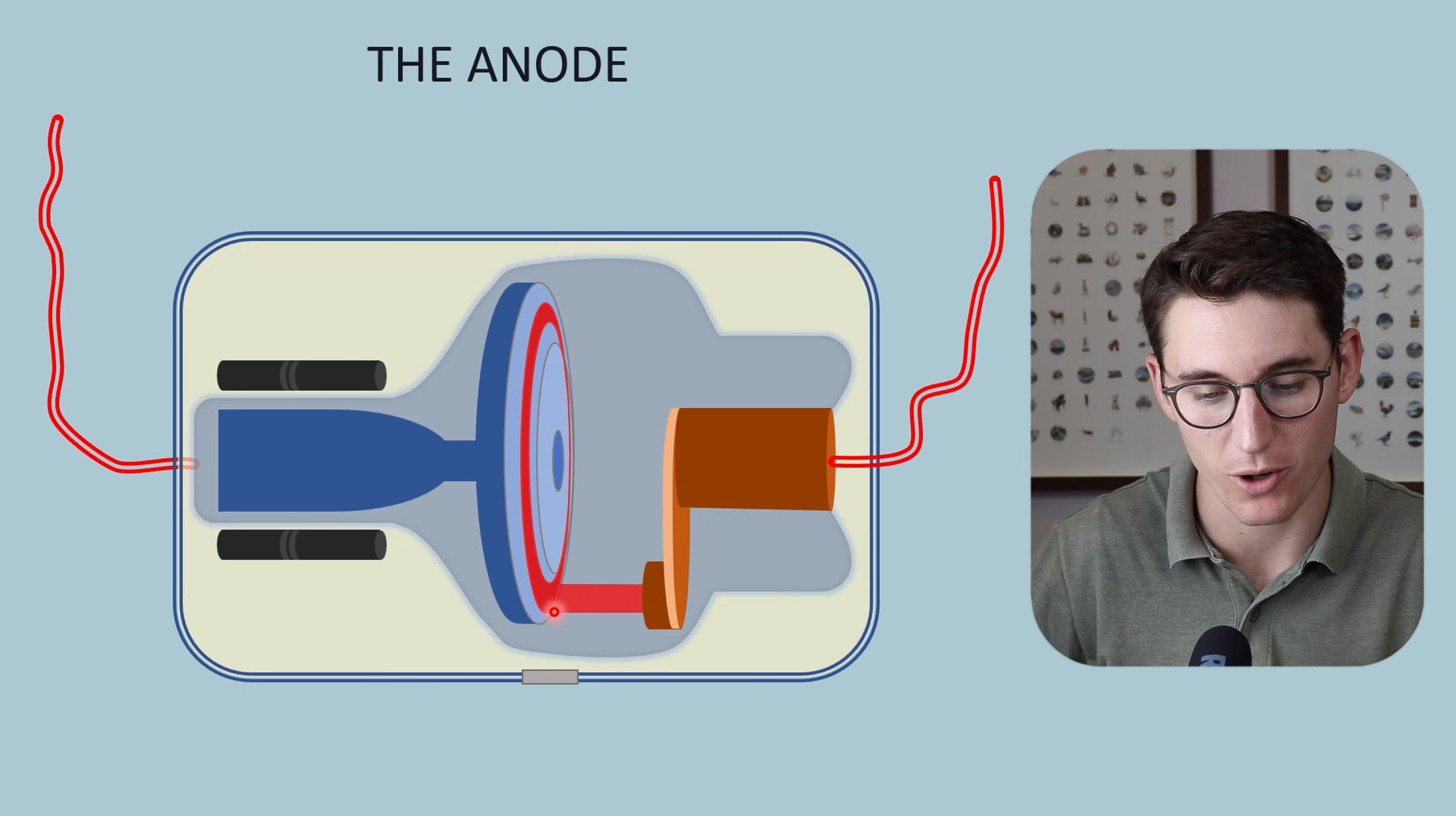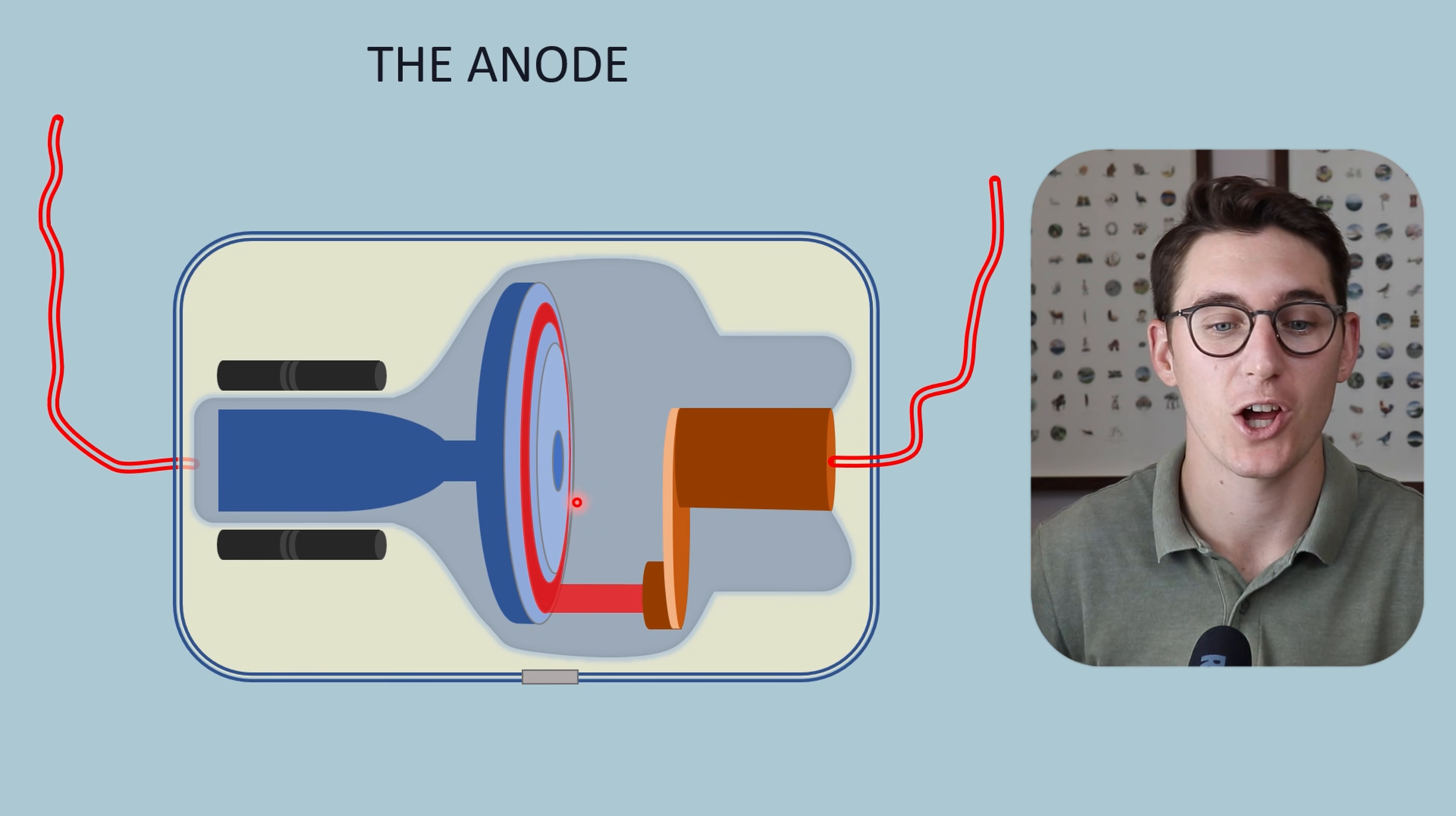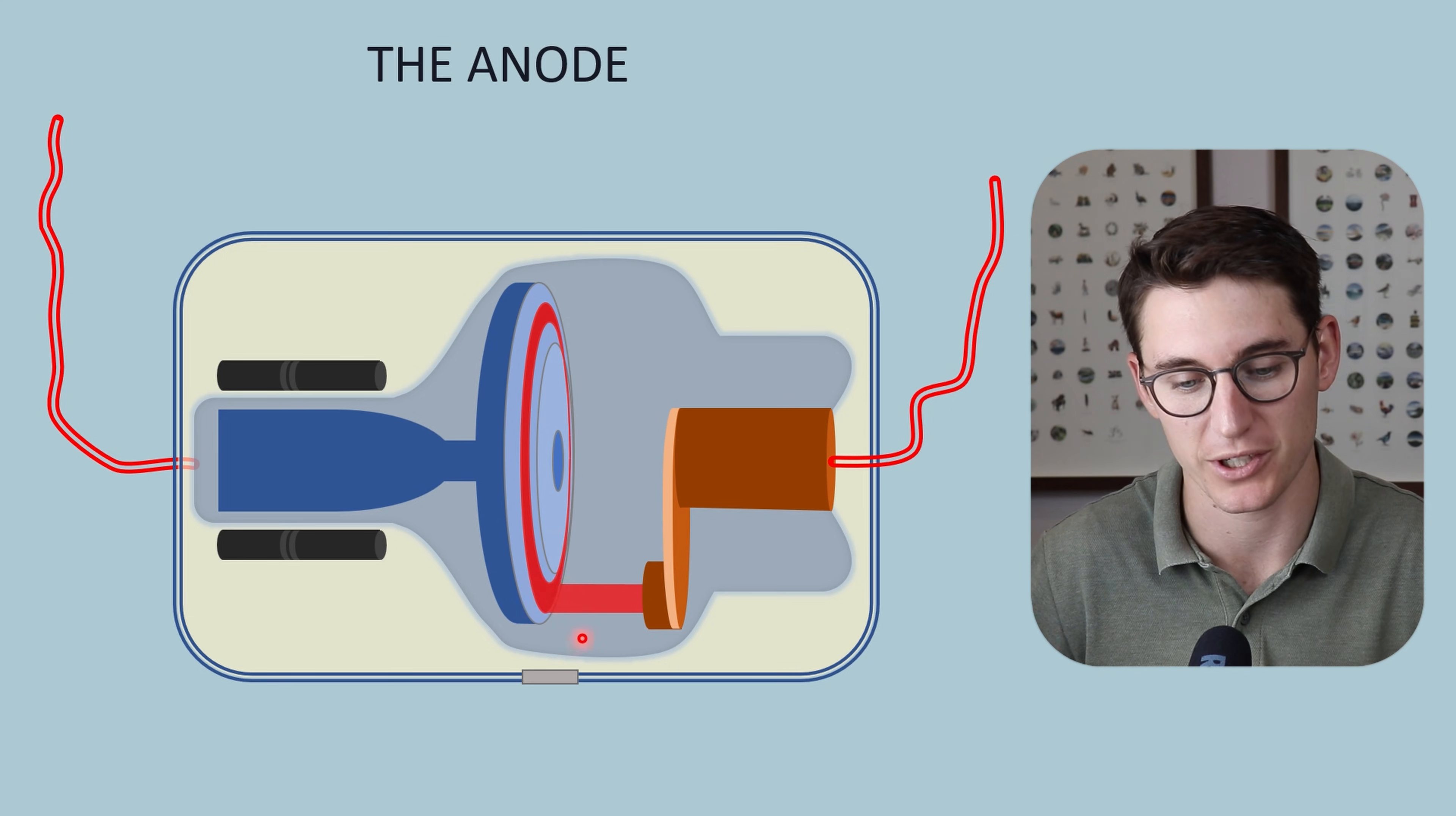In red I've marked the actual focal spot. If that anode were to rotate, we would create a focal track all the way around our anode. We spread that heat generation over a larger surface area just by rotating the anode—this is the primary mechanism for dealing with heat production.